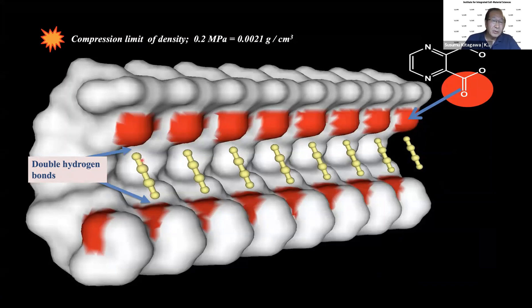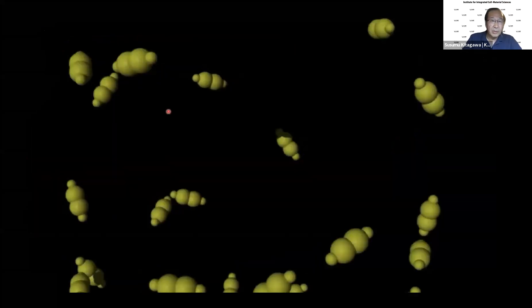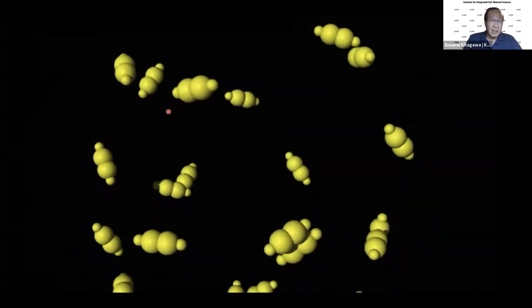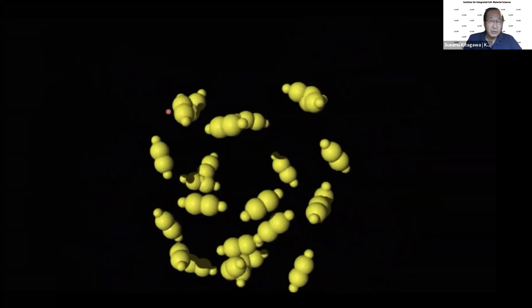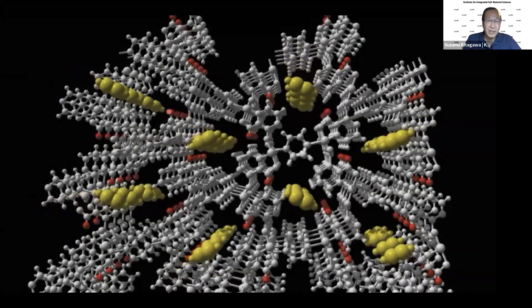The hydrogen of acetylene and the coordinated oxygen of the carboxylate form double hydrogen bonding. What is interesting is the compression limit of acetylene: its density is 0.002 g/cm³, but in this case it is 0.44 g/cm³ — 200 times larger — yet still stable. If you apply pressure above 2 bar at room temperature, an abrupt reaction occurs. But in CPL-1, our compound, acetylene molecules are accommodated in a very regular arrangement.